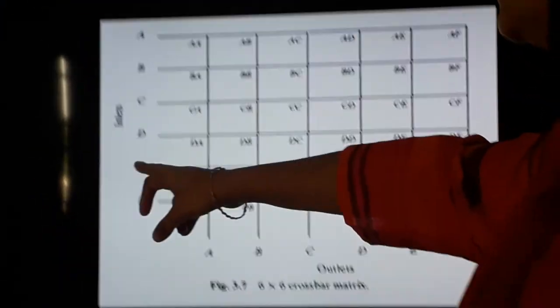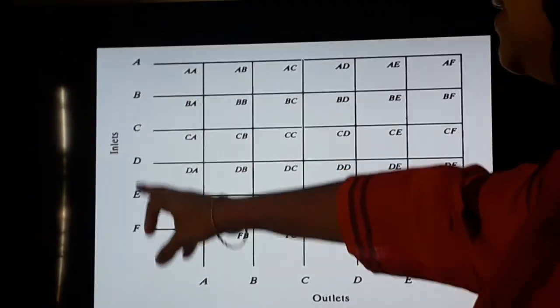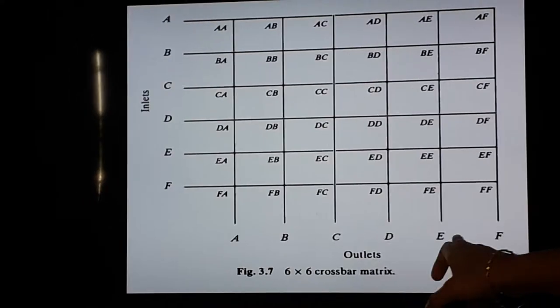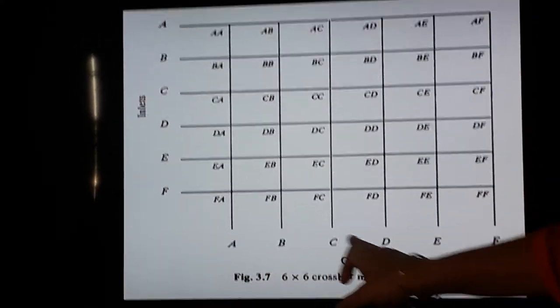From the diagram we can see that these are the inlets A, B, C, D, E, F and these are the outlets A, B, C, D, E, F.